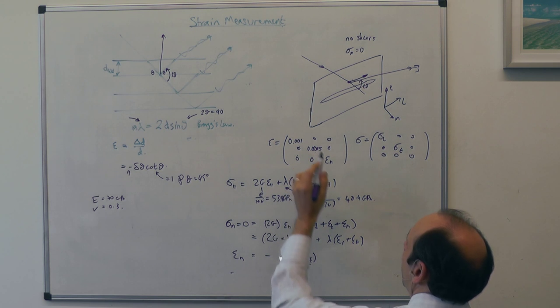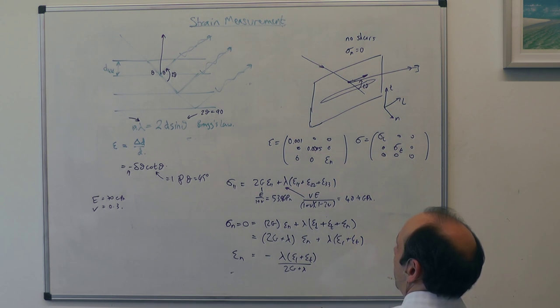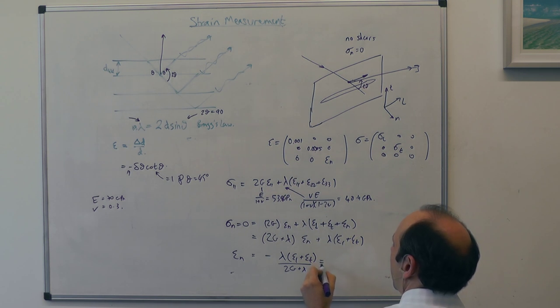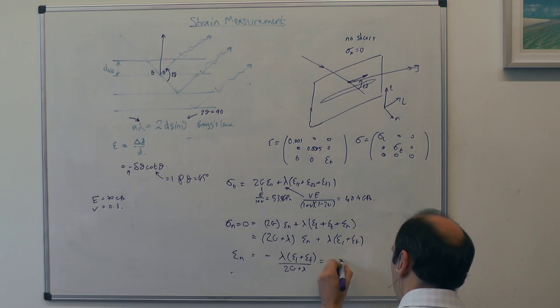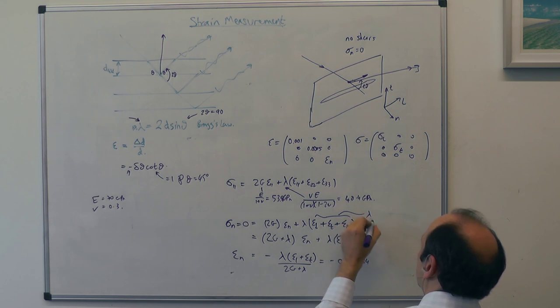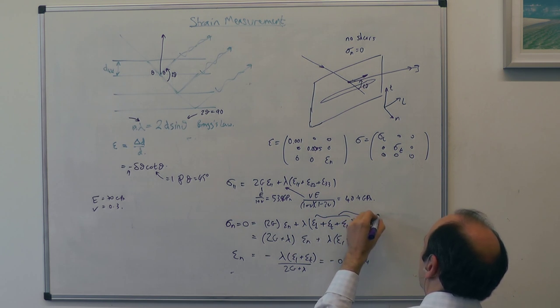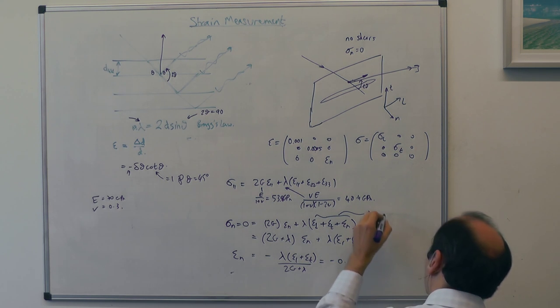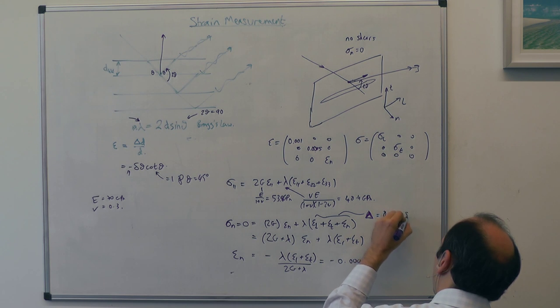We can say that ε normal is equal to minus λ(ε L + ε T) divided by (2G + λ). We know ε L and T, they add together to be 0.0015. We know λ and G, so we know ε normal, and that gives us a ε normal of minus 0.00064. So we know these guys also as Δ, as the dilatation, and if we sum those up, we get a Δ of 0.00085.